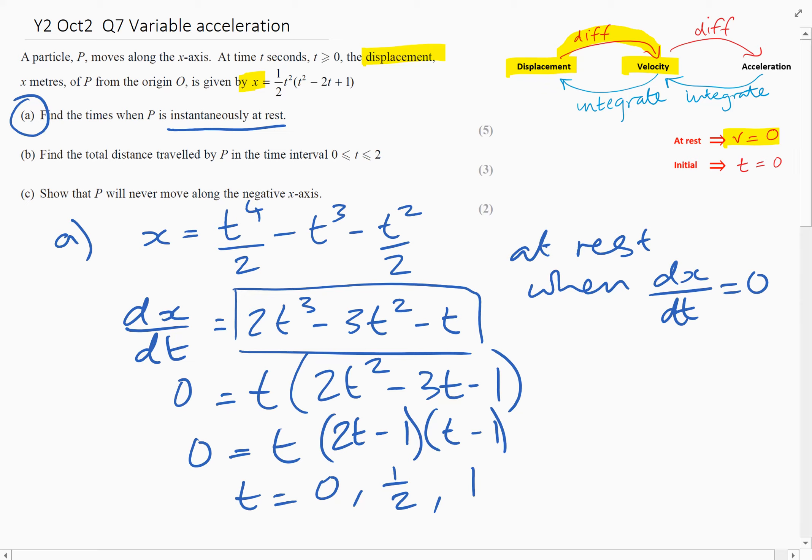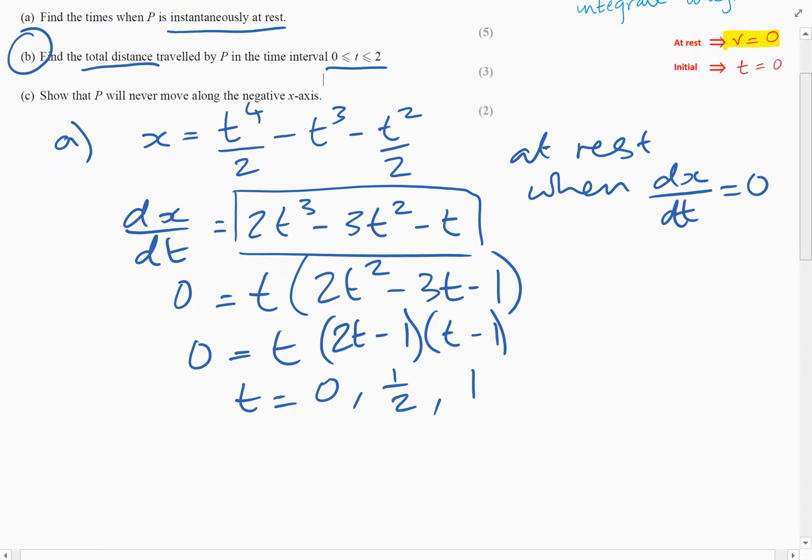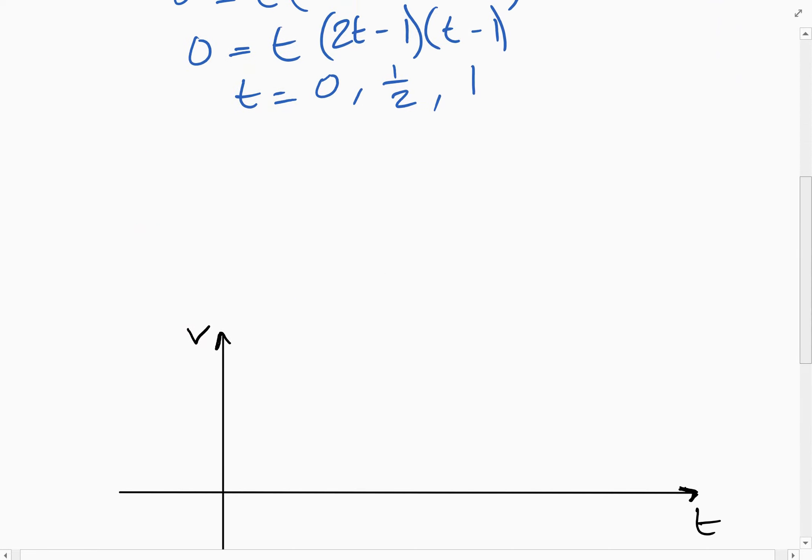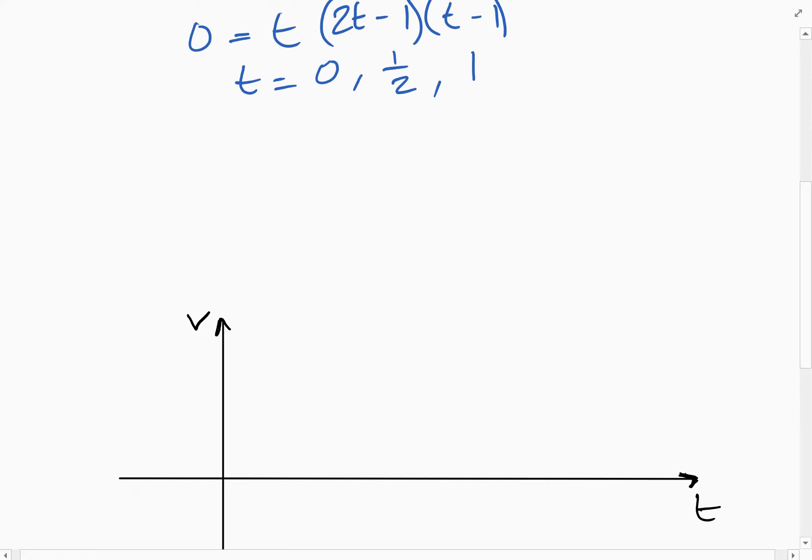Looking at part B, we've got to find the total distance travelled by P between zero and two seconds. Now, you might guess we need to integrate here to find the displacement. It's a slightly tricky question though, and it helps to sketch a graph. So if we sketch a graph, the equation, I'll just write it down here again. So if we sketch a velocity time graph, the area under it will be the displacement. So just sketching this graph, you'll see why we need to sketch the graph in a minute.